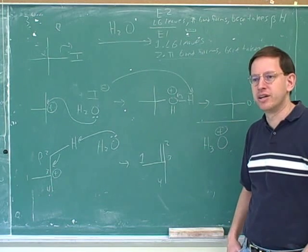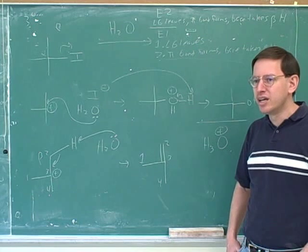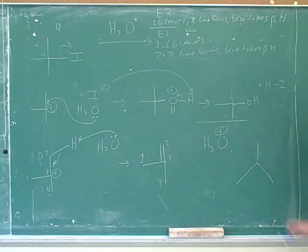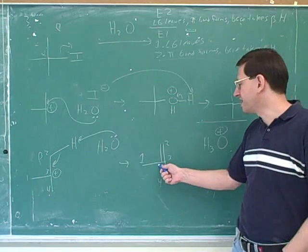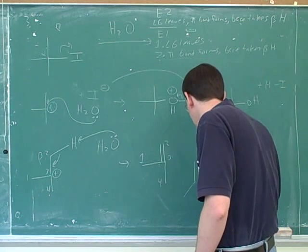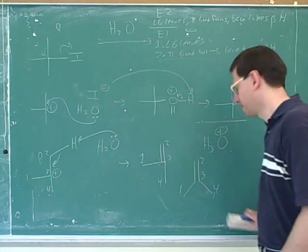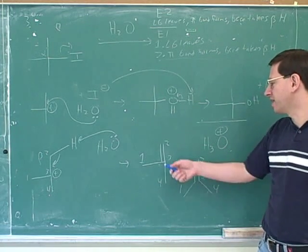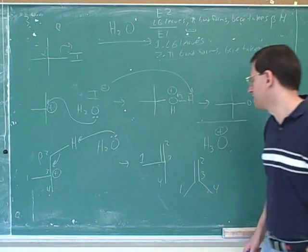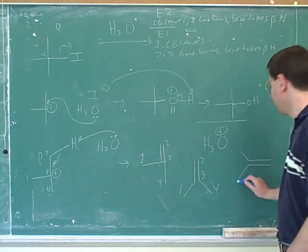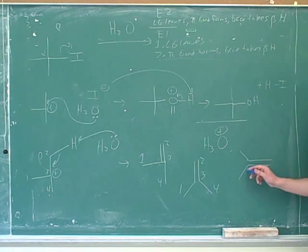Do you remember what the bond angle is when you're trigonal planar? 109? No, that would be tetrahedral. It's 120 degrees. When you're trigonal planar you're splitting the circle into three regions, and 360 divided by three is 120. So the bond angle is not 90 degrees — we would not want to draw the double bond like that. We'd want to draw it showing a 120-degree bond angle between the number one and number four. When we have a double bond, we should draw it with 120-degree bond angles, whether it's horizontal or vertical.